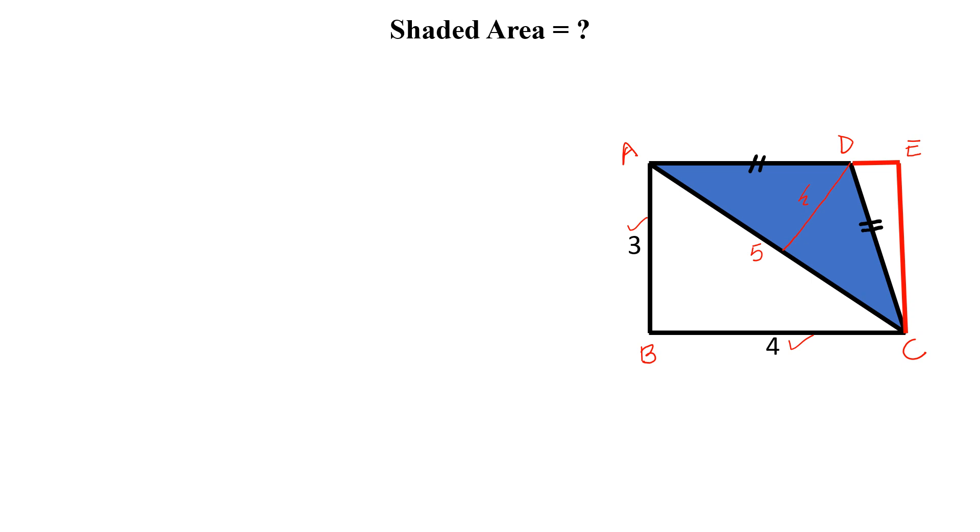But how can we find the height? Let this length be A, then the total length is 4, so this will be 4 minus A. If this is 4 minus A, this length will be 4 minus A. And this is 3, so this side will be also 3.